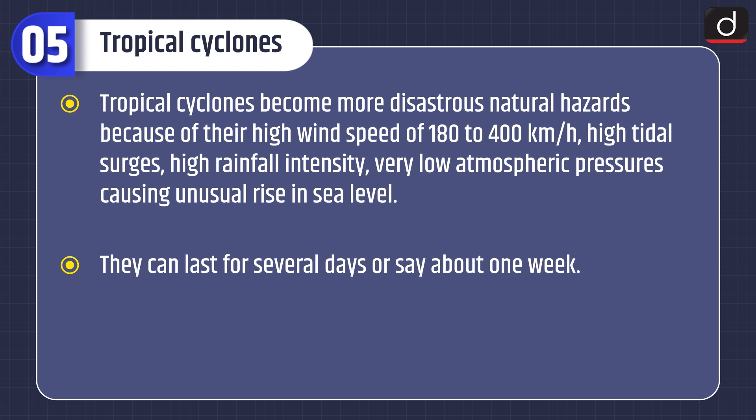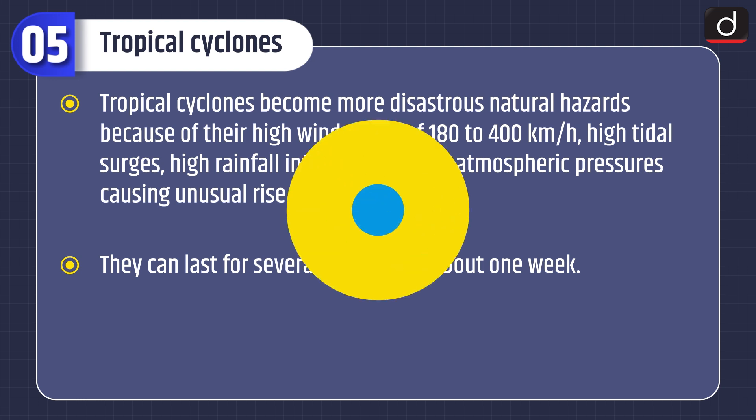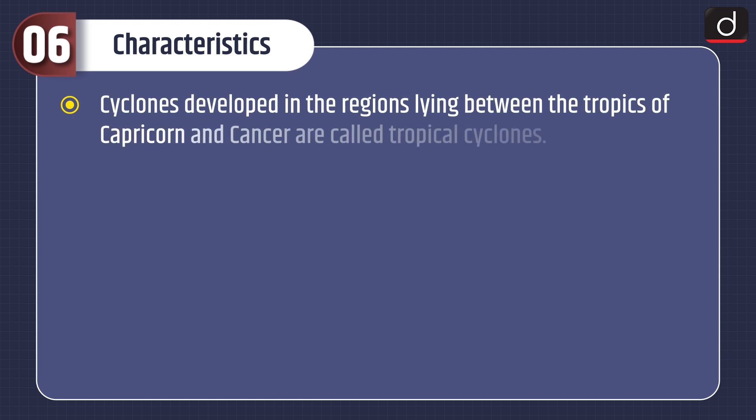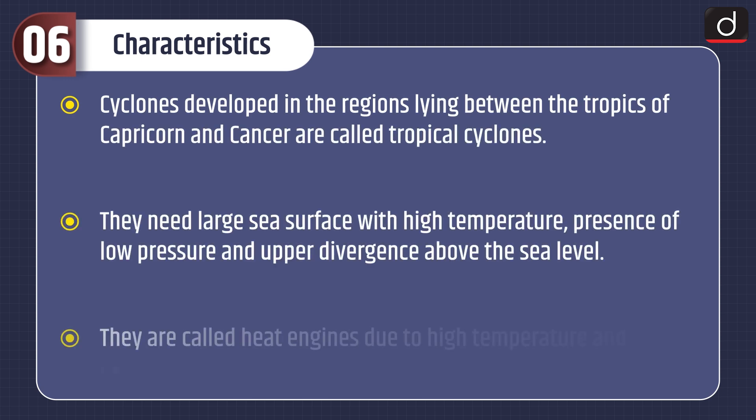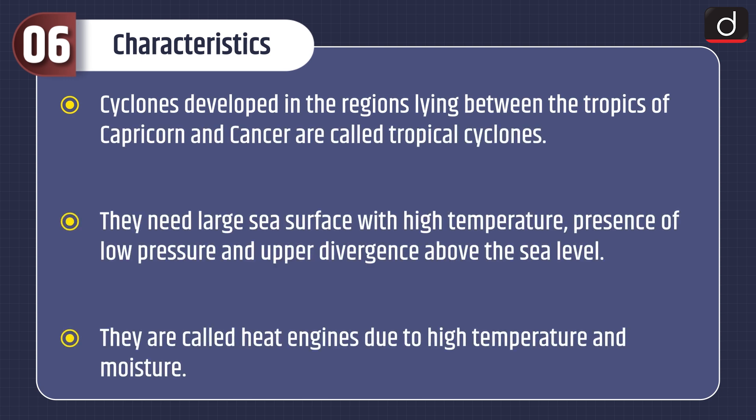Tropical cyclones can last for several days, or about one week. Moving on to the characteristics: cyclones developed in the regions lying between the tropics of Capricorn and Cancer are called tropical cyclones. They need a large sea surface with high temperature, the presence of low pressure, and upper divergence above sea level. They are called heat engines due to high temperature and moisture.